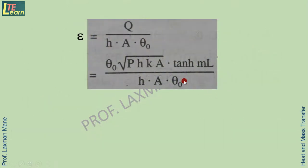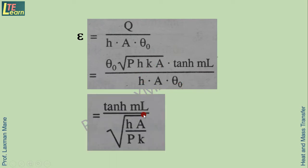Let us see the further steps. Effectiveness ε equals Q upon h·A·θ_0. This Q, the actual transfer rate, is obtained by the expression already discussed, divided by h·A·θ_0. Now cancellation of θ_0 and h·A terms, we find tanh(mL) at the numerator and square root of h·P upon k·A at the denominator.